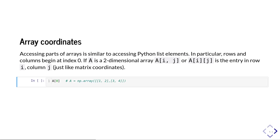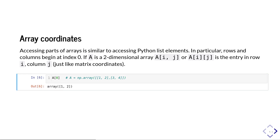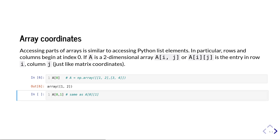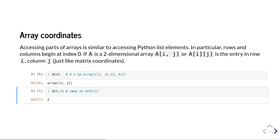If we want the top row of a, we use a[0], which gives a one-dimensional array containing 1 and 2. If we want the top-right entry, we use a[0, 1] or a[0][1], which gives the entry in row 0 and column 1 — that's 2, as we can see when we run it.